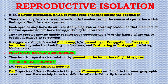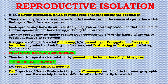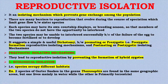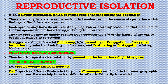Reproductive isolation is an isolating mechanism which prevents gene exchange among populations. Many barriers to reproduction evolved during the course of speciation, limiting gene flow between sister species. Each species may have its own courtship displays or breeding season so that members of two species do not have the opportunity to interbreed. There is a useful dichotomy between pre-zygotic reproductive isolating mechanisms and post-zygotic isolating mechanisms.